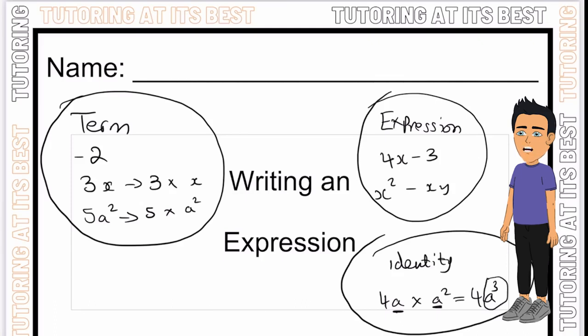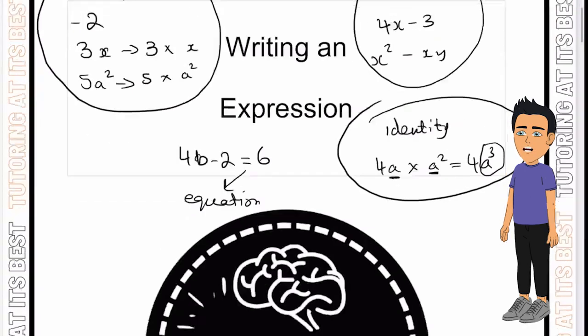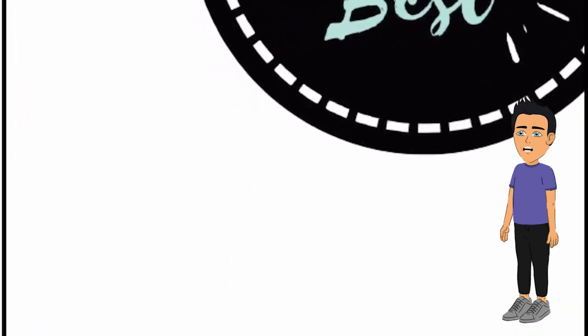Don't forget that an equation states that two expressions are equal in value. For example, 4b minus 2 equals 6, because it has an equal sign that makes it an equation. I hope you now understand what a term is, an expression and an identity. Let's jump into a quick example before we start the 10 minute timer.